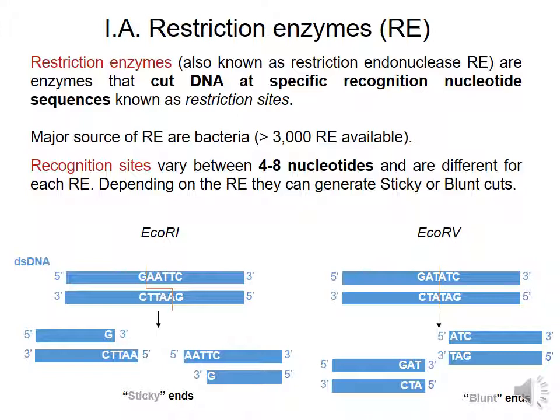There is another group of enzymes called blunt ends because of the way they cut the DNA straight, leaving two equal fragments on each side.